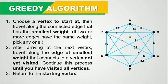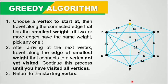For example, if we start at vertex A, we will travel along the edge that has the smallest weight. The edges connected to A are: F to A, A to B, A to E, A to D, and A to C. The edge which has the smallest weight is A to D, so therefore we will travel along this edge.